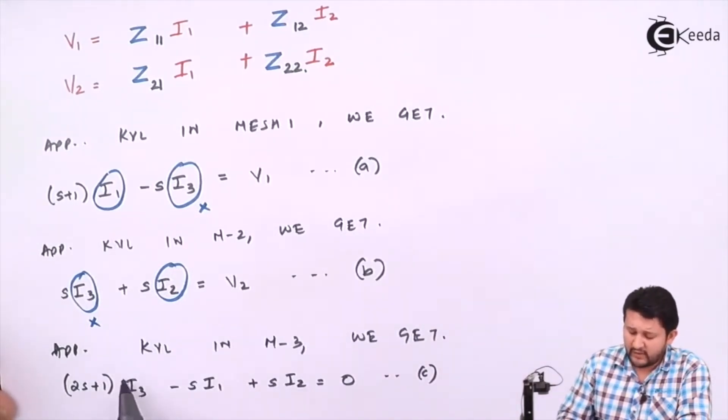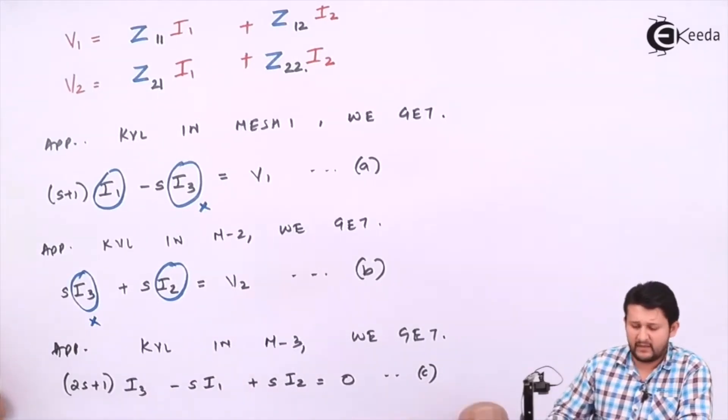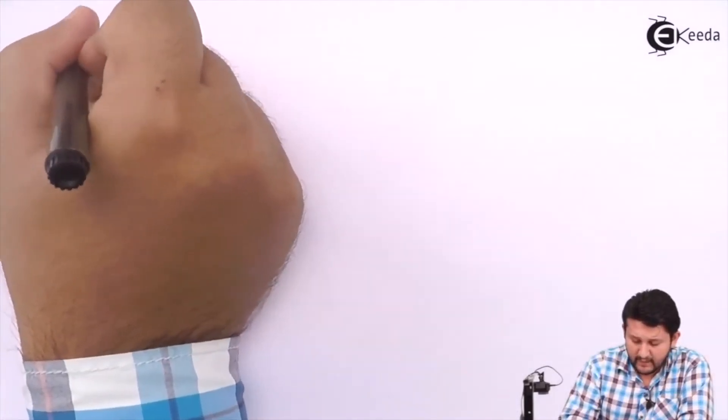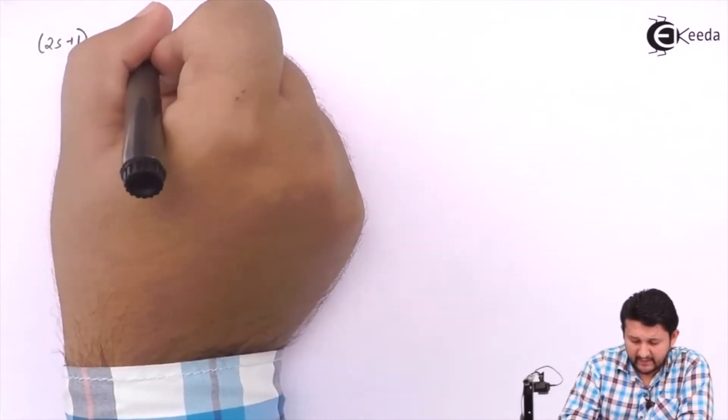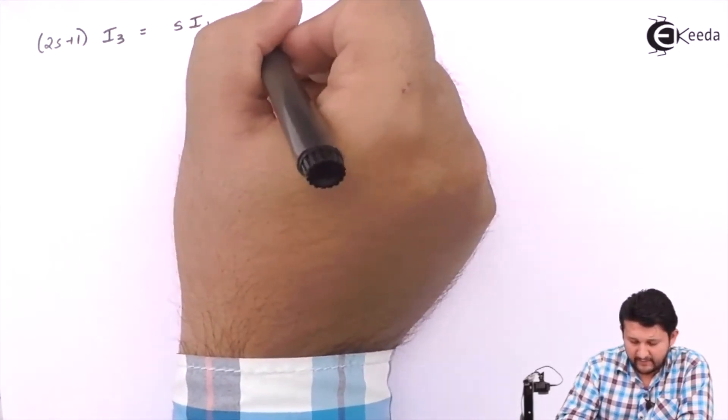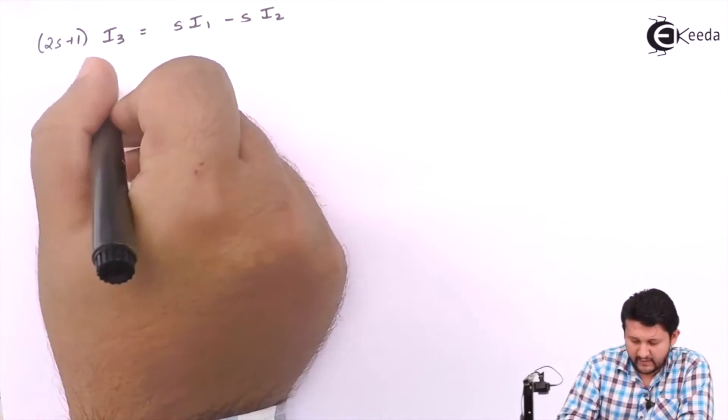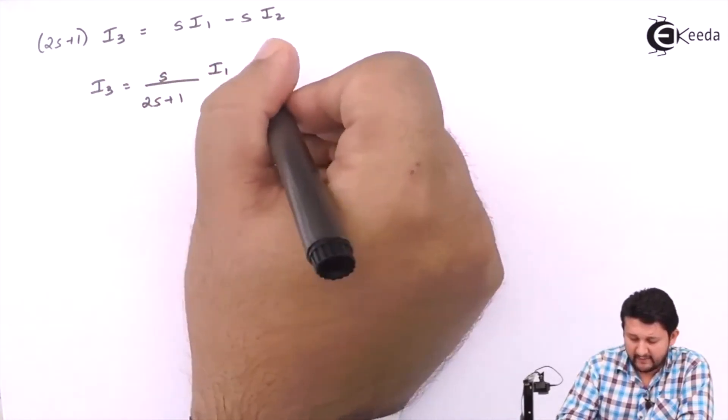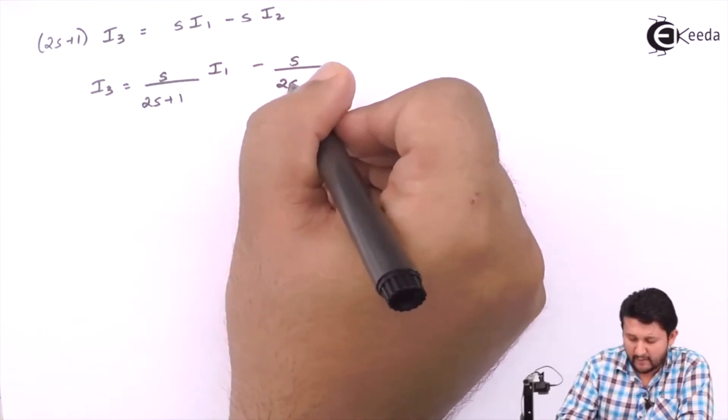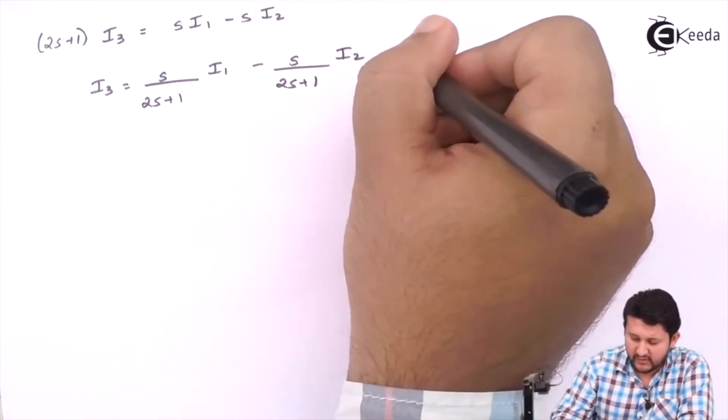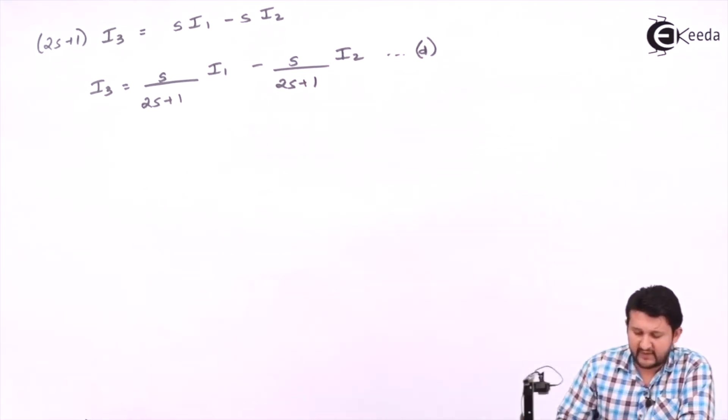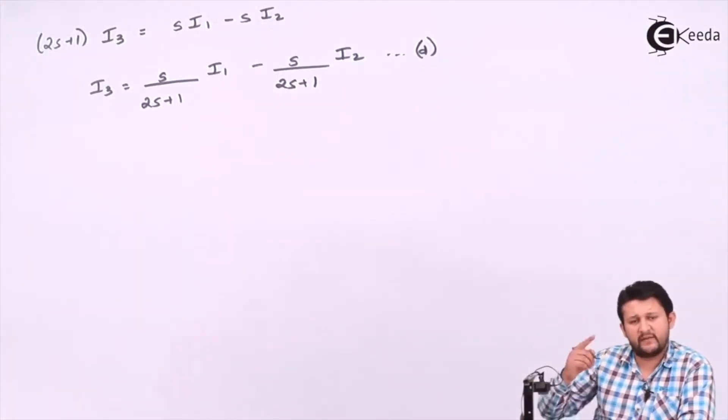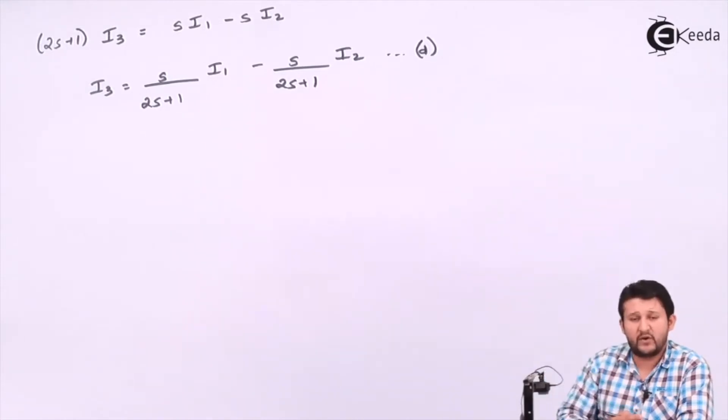That would be equation C. So this equation I have solved only to get the value of I3. Simplify to get the value of I3. Shift everything and rearrange. So it will be (2s+1)I3 = sI1 - sI2. Your I3 will be s/(2s+1) times I1 minus s/(2s+1) times I2. So you have got the equation of I3 in terms of I1 and I2.